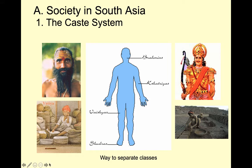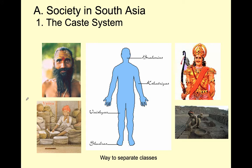Society in South Asia, number one: the caste system. The caste system is what we might call the class system — in fact, caste comes from a Portuguese word for class. Traditionally in India there are four, maybe five, major castes. We can envision castes as parts of a human body. At the top we have the Brahmin, the priestly caste — the mouthpiece of the gods. The second caste is the Kshatriya, the warrior caste.